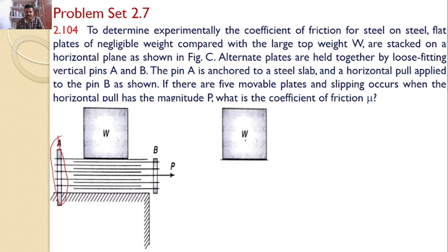The first force is the self-weight W, which always acts downwards. This W is placed on the 10 plates, so there is a normal reaction acting vertically upwards. There is also a frictional force acting in the opposite direction of the movement. In the direction of force P, opposite to that is the frictional force mu times n.